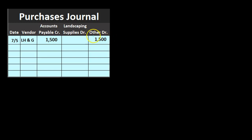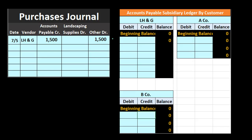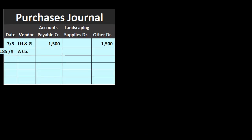If purchases don't fall into a standard column, we use an 'other' column, which gets broken out at the end of the time period. As we record each transaction, we also record it to the accounts payable subsidiary ledger — not the general ledger. For the first entry, LHNG shows a balance of $1,500. On 7-6, we made a purchase on account for $185, going to landscaping supplies, increasing accounts payable by $185.